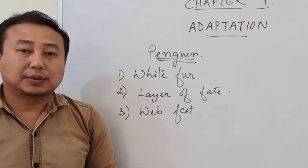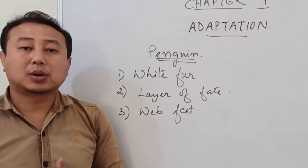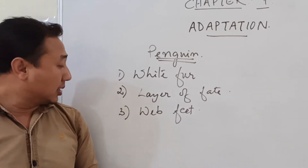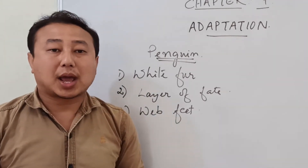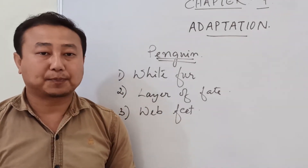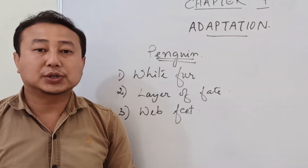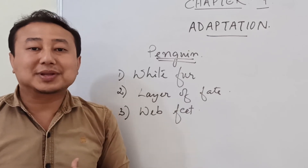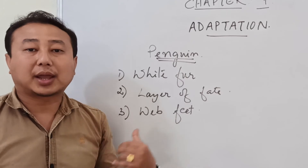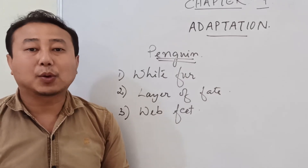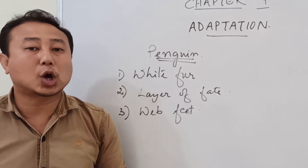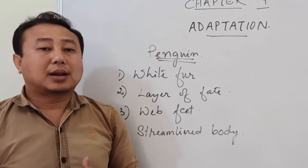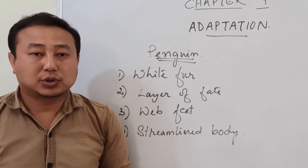The next adaptive feature present in the penguin is webbed feet. Webbed feet help the penguin swim easily in water. We know that penguins are good swimmers, and this swimming ability is made possible by the webbed feet. Without webbed feet, the penguin would not be able to swim properly in water.